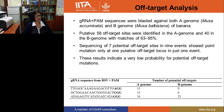We performed off-target analysis by BLASTing the guide RNA sequences against the Musa acuminata A genome reference and the B genome. We found about 58 putative off-target sites in the A genome and additional sites in the B genome matching 63 to 95 percent. From those, we identified seven to nine high-priority potential off-target sites and found only one point mutation at one putative off-target locus in just one event. Our results indicate a low probability for potential off-target mutations.